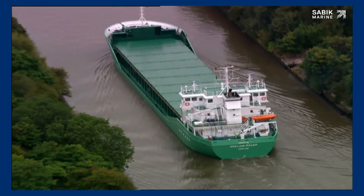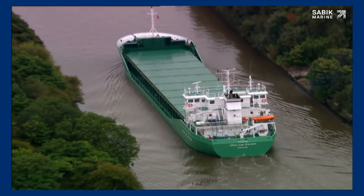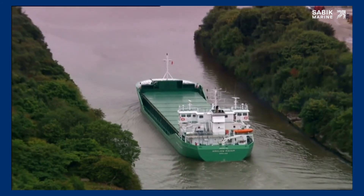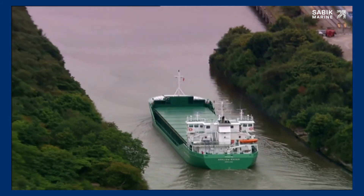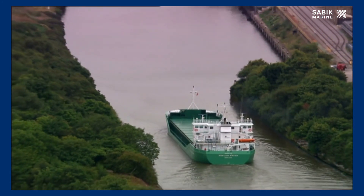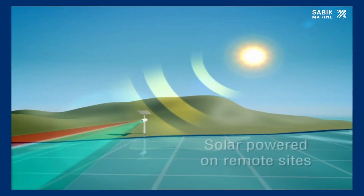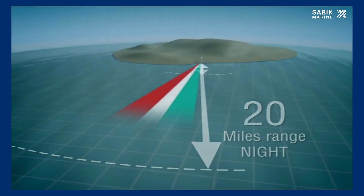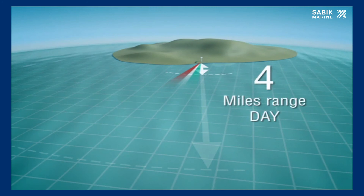Pell lights are available in a range of different models to suit a wide variety of applications, and all are individually configured to suit the intended location. Some are solar powered on remote sites and work completely automatically, giving up to 20 miles range at night. Others operate on commercial power and can provide up to 4 miles range by day.